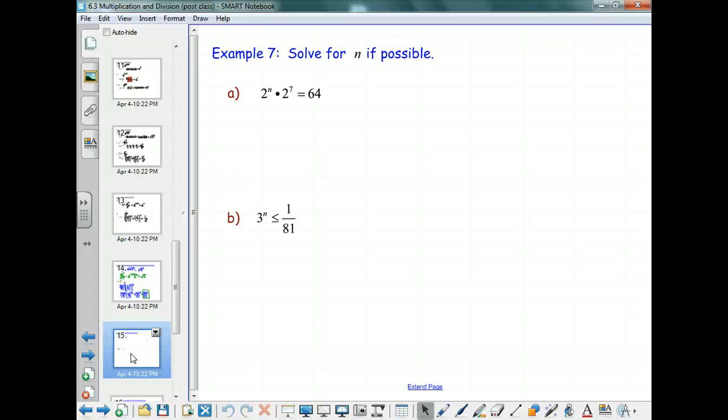So you'll notice on the left-hand side, both of these have a base of 2, right? So that just sort of screams out your exponential rules, because this is just like one of the rules. How can I combine 2 to the n and 2 to the 7? You can add the exponents, right, Lauren? Yes. So I can write it like this.